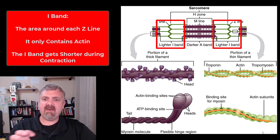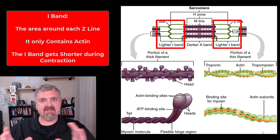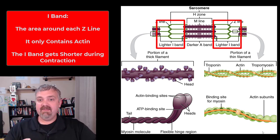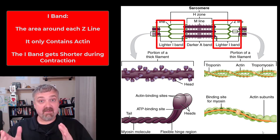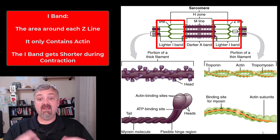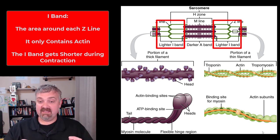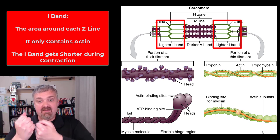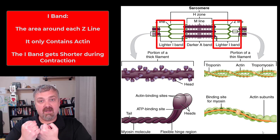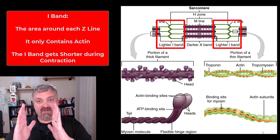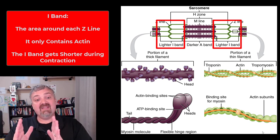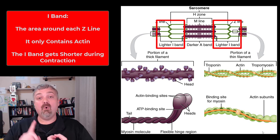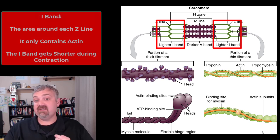Then we have the I bands. You can see at the bottom — lighter I band, darker A band — that's because the thick filaments are thicker and darker. The I band is this area around a Z line, so it's actually going to be part of two separate sarcomeres. The I band only has thin filaments, and the I band is going to get smaller when muscles contract, because myosin is pulling and tugging on actin, causing the sarcomere to shrink down. I'll show that in the video on muscle contraction.